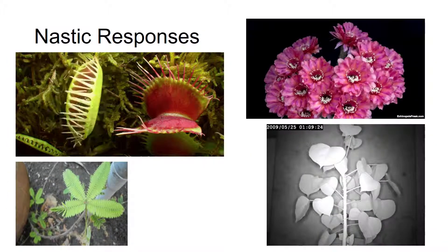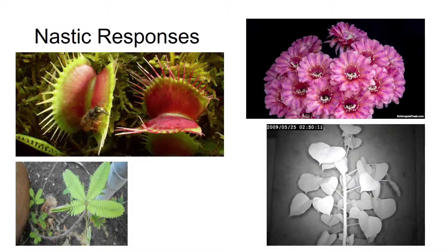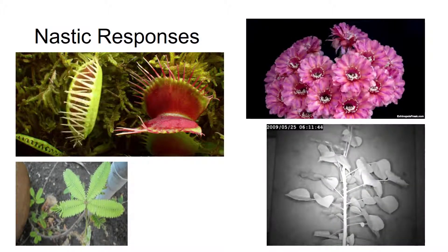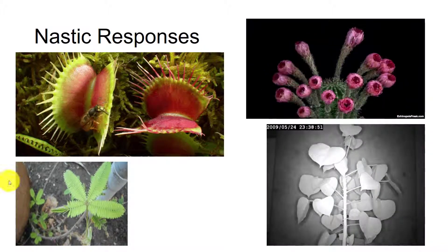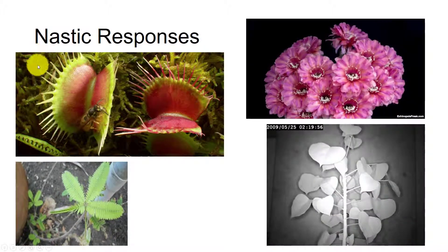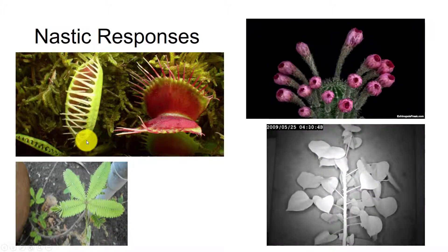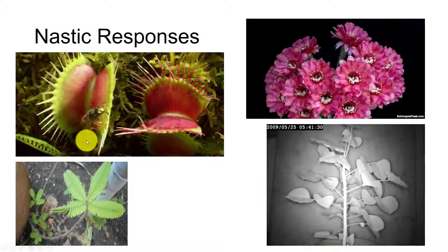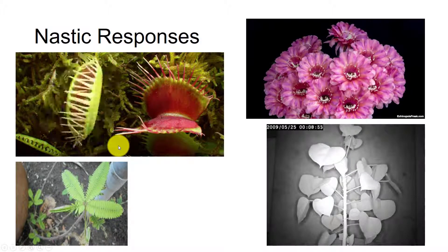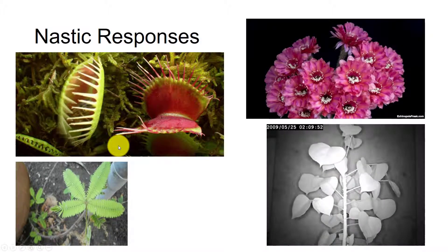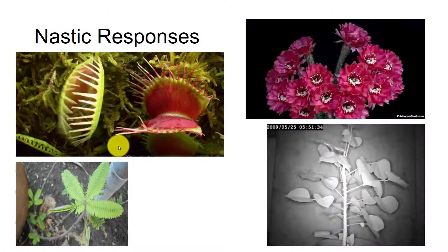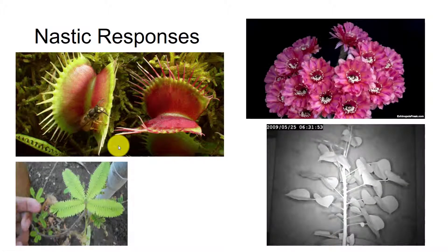A nastic response is a stereotyped non-growth response that is not oriented with regard to the stimulus. For example, the trap leaf of the Venus flytrap has six large sensitive trichomes. If a fly or other insect touches any two of these, the trap closes. It does not matter if the fly was moving in a certain direction — the trap always closes in the same manner in this thigmonastic response.